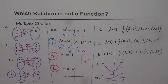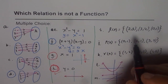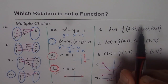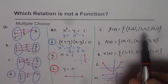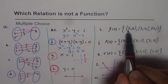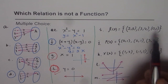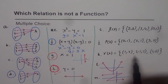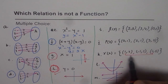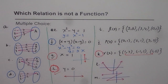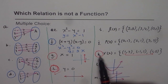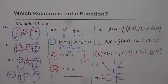For the coordinate sets, a relation is not a function if two ordered pairs share the same x-coordinate. In the first and second sets there is no repetition, so they are functions. But in set R, the x-value 1 appears twice — (1,2) and (1,5) — so 1 is associated with both 2 and 5, making it not a function.